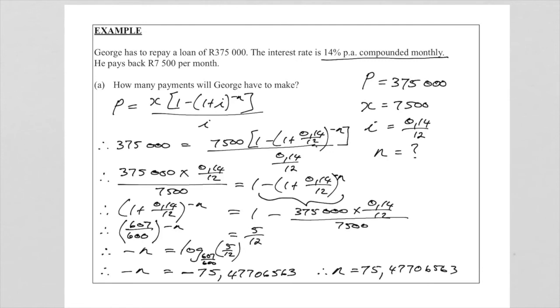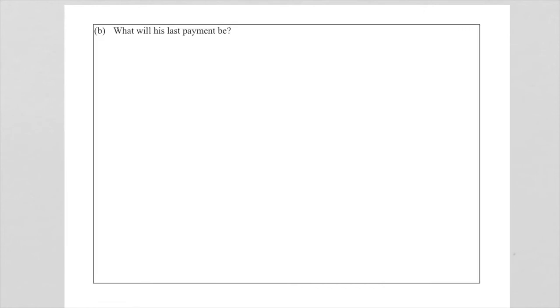What does this answer mean? It means there will be 75 full payments of the 7500 rand and then there will be one lesser payment. This was the A part to this question, so I'm sure you know what the B part of this question will be. This is now where they want us to calculate that last payment. So please remember there was 75 full payments and one lesser payment.